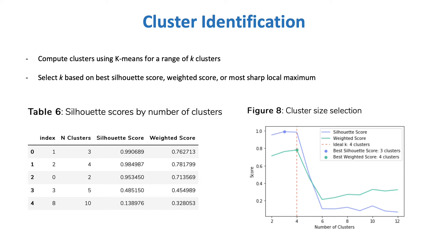Those two UMAP components are used to compute clusters using the k-means algorithm. Since k-means requires that we define k, the number of clusters, which we don't know upon loading the dataset, we try a range of values of k and analyze the quality of clusters for each value. The method used to ultimately select the ideal k is chosen by the user and may be one of: silhouette score, a modified large-k-prioritizing silhouette score to reward large numbers of clusters, or a "second derivative" method that identifies the sharpest local maximum of the score. As seen here, the ideal k based on the latter two methods is four, while the basic silhouette score would have selected k equals three.